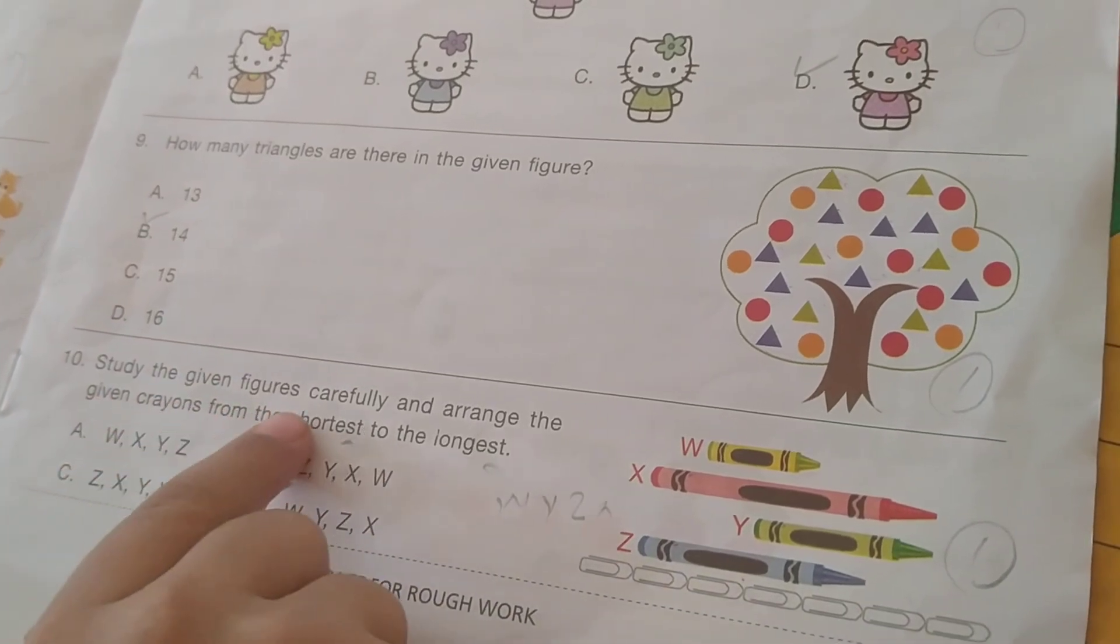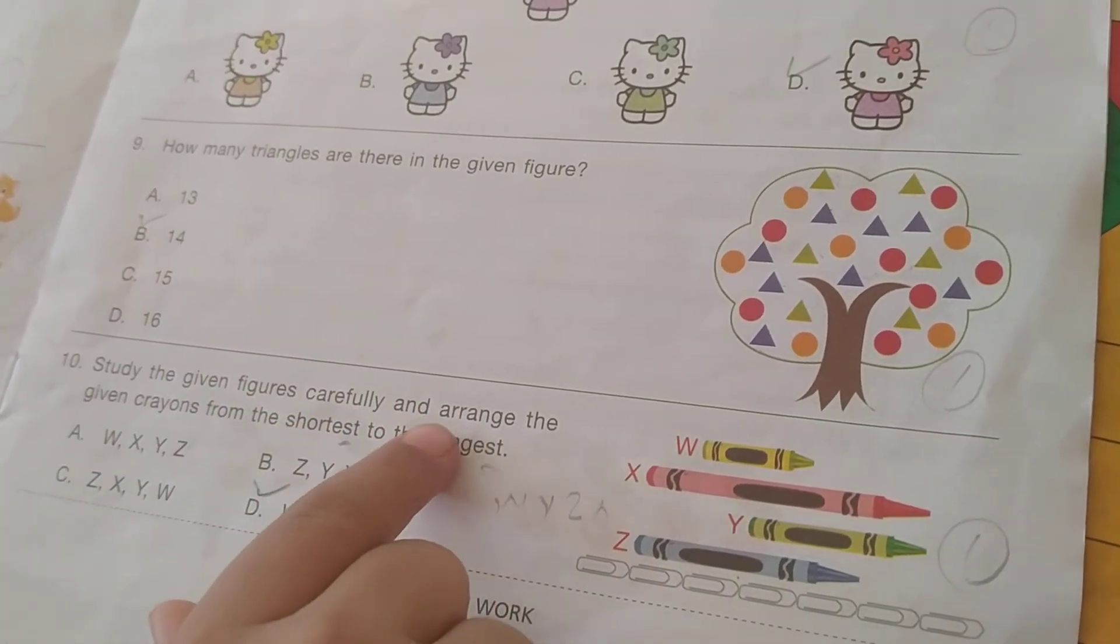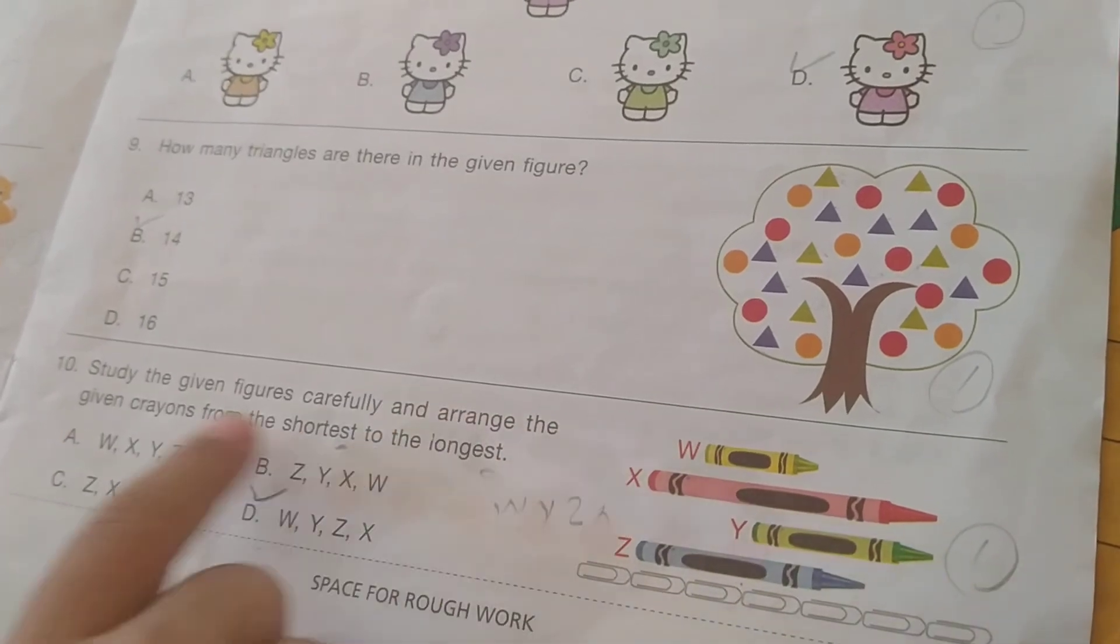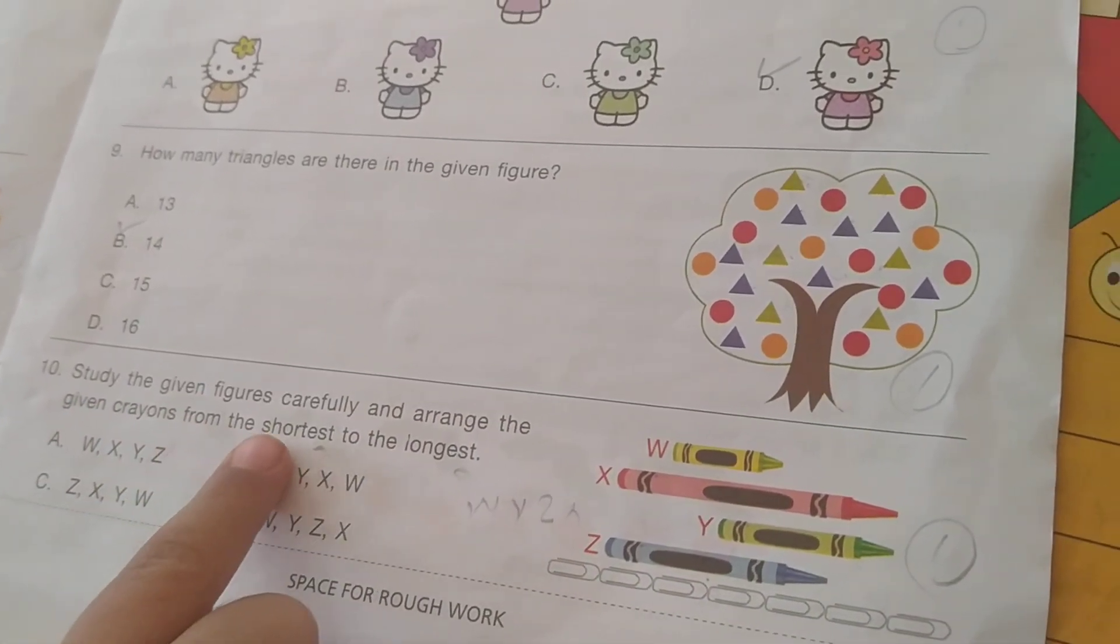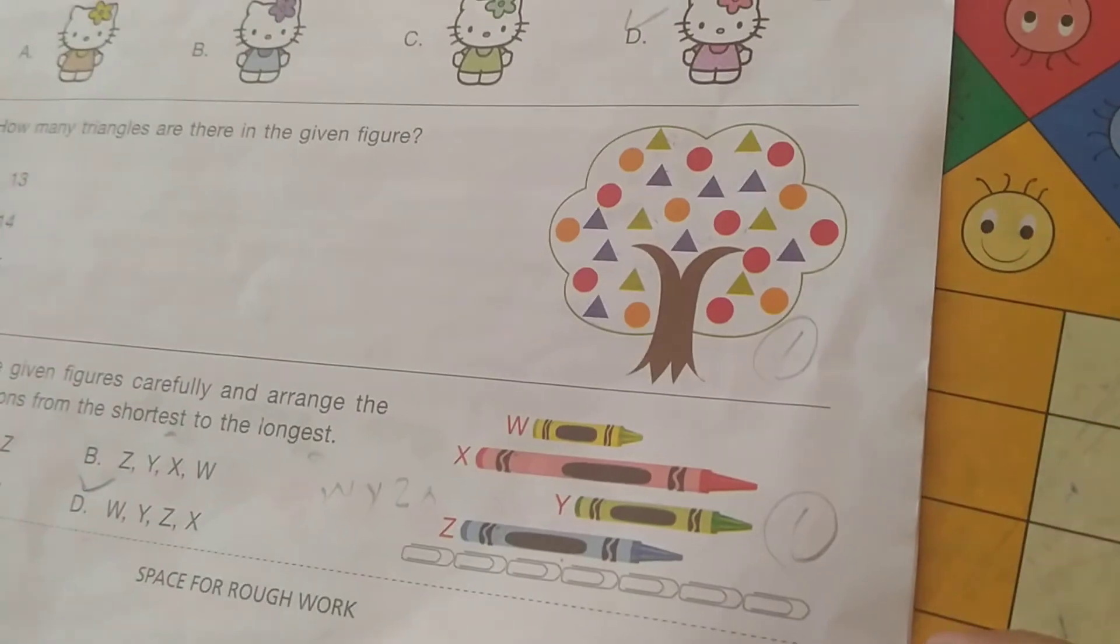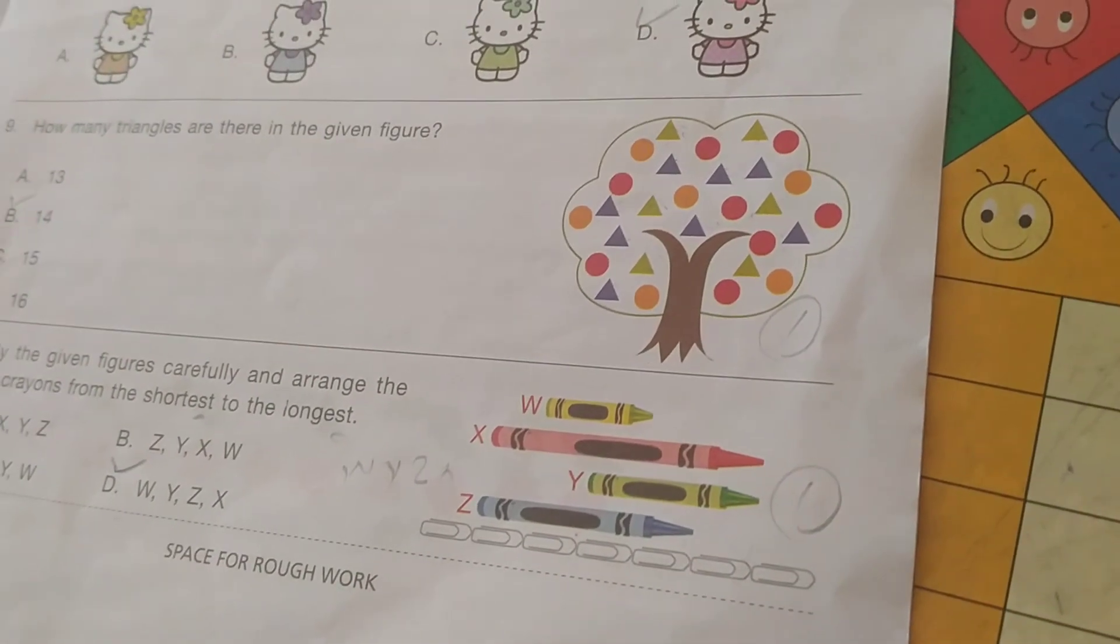Study the given figure carefully and arrange the given crayons from short to long. So the answer is D.